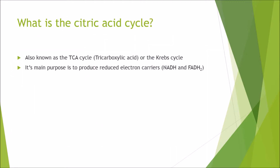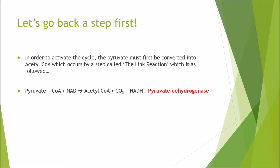First of all, what is the citric acid cycle? The citric acid cycle is also known as the TCA cycle, which stands for tricarboxylic acid cycle, or you can call it the Krebs cycle, named after the founder of it. Its main purpose is to produce reduced electron carriers ready for the next step in glucose metabolism, which is called oxidative phosphorylation or the electron transport chain.